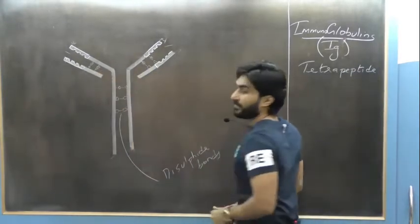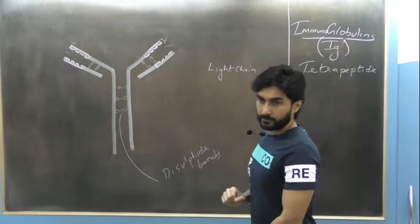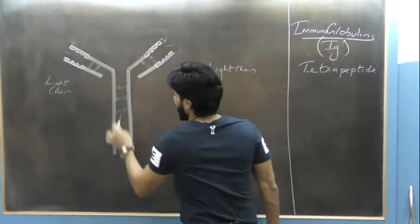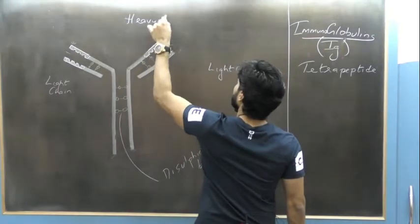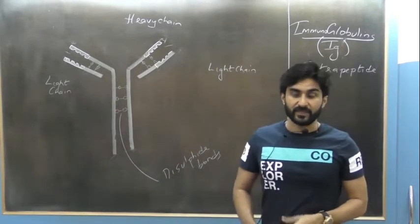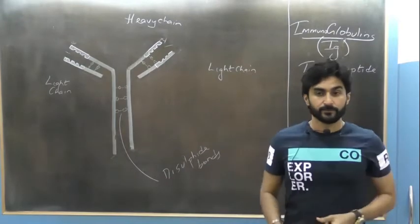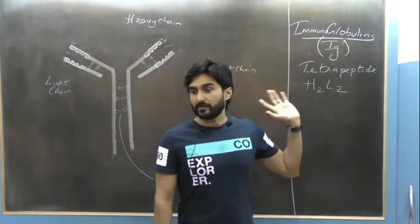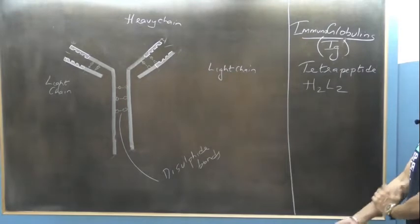Two of the four chains are smaller, with lower molecular weight, so we call them light chains. The other two chains are longer with higher molecular weight and more amino acids — we call them heavy chains. Every antibody molecule is made up of two light chains and two heavy chains, described as H2L2.